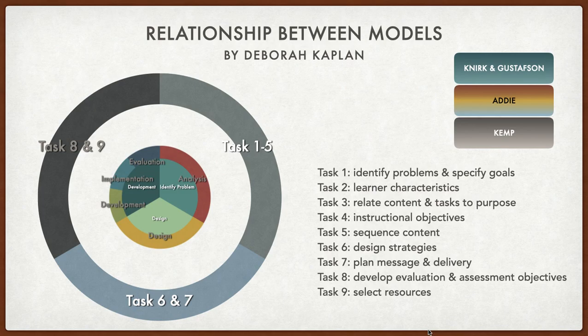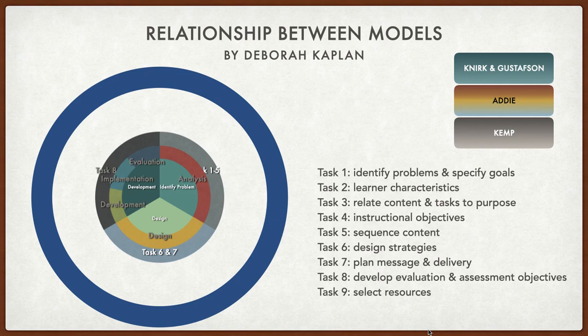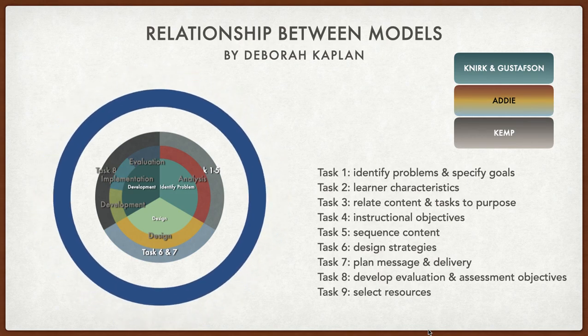With this particular visual representation of the three models, while it does a good job showing the relationship and similarities among them, its drawback is that it downplays the importance of the formative evaluative process that takes place throughout all phases in each of these models. The result is constant revision and improved design. I've added a final outer ring to represent this ongoing evaluative process more concisely.